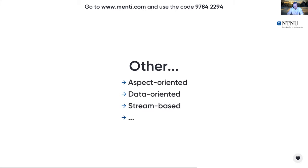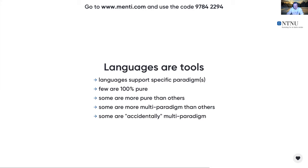There is also aspect-oriented, data-oriented, stream-based programming, and other paradigms mentioned in the original poll. To sum up: languages are tools, languages support specific paradigms, and most languages are not 100% pure for a given paradigm — they are multi-paradigm. Some languages are by design multi-paradigm, like C++, and some are accidentally multi-paradigm. Some multi-paradigm languages are good at supporting multiple paradigms — like Scala, which supports functional, object-oriented, and concurrent paradigms without getting in your way — whereas C++ says you can do all those paradigms, but the way you have to go about it makes it really hard.